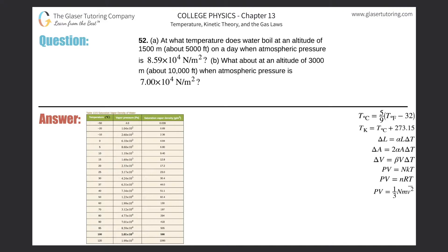Number 52, letter A. At what temperature does water boil at an altitude of 1,500 meters, about 5,000 feet, on a day when atmospheric pressure is 8.59 times 10 to the 4th newtons per meter square?